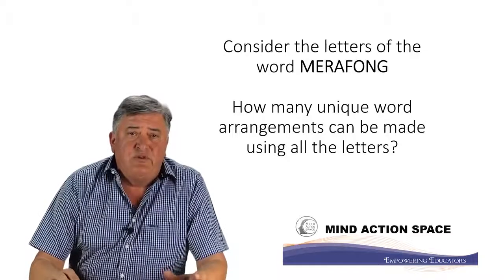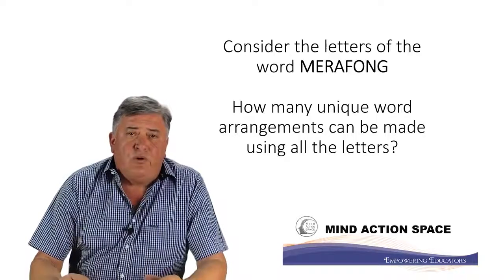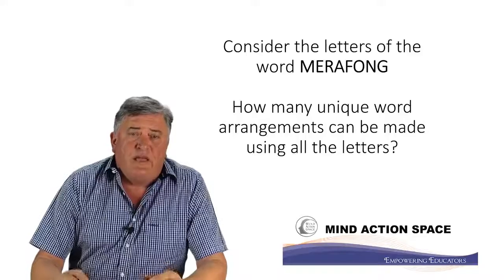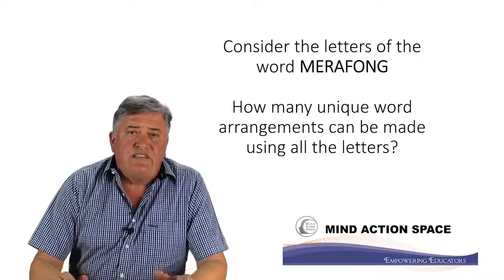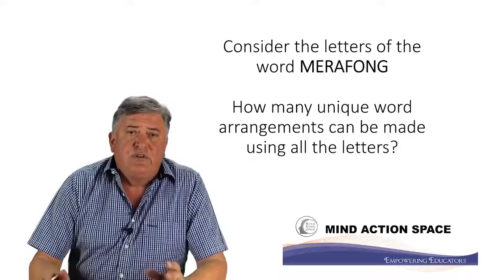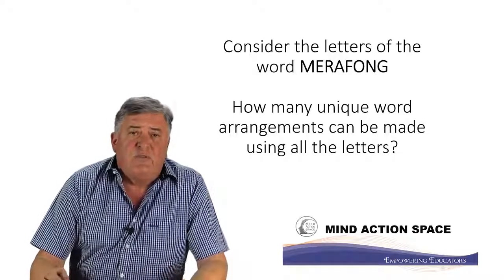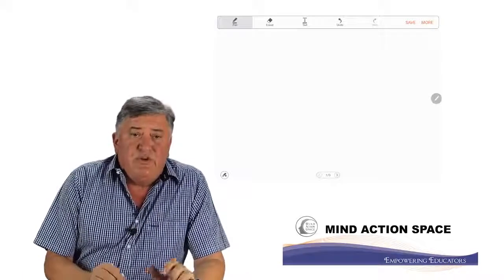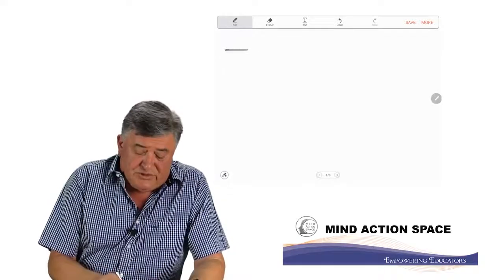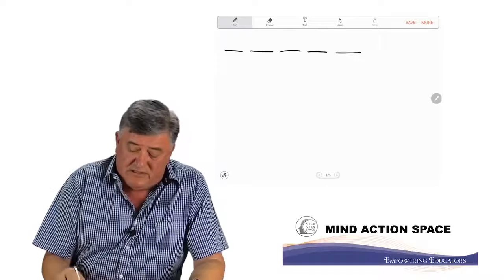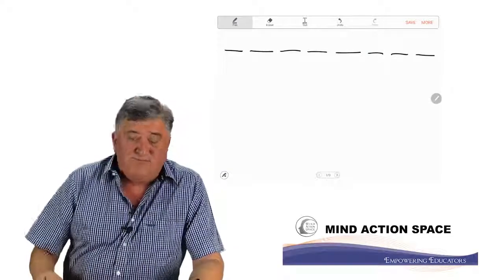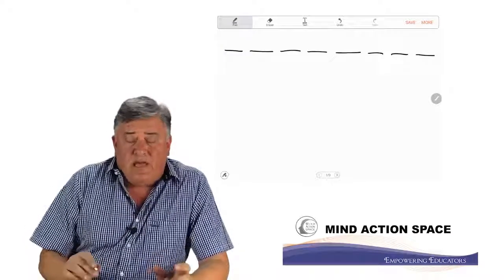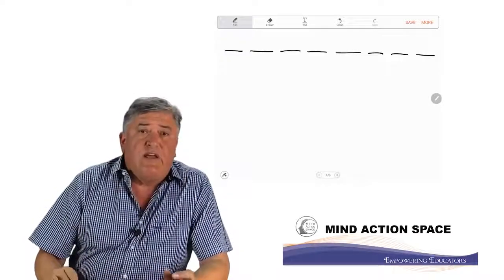To look at the solution of this, I always suggest that you draw little lines — I call it a picture of this problem. The lines represent the positions. There are eight letters, so we're going to draw eight little lines to represent the eight positions of the word marafong. I'm going to use my pen to draw eight lines to represent the eight positions. Eight letters in the word, and we want to know how many ways we can arrange them.